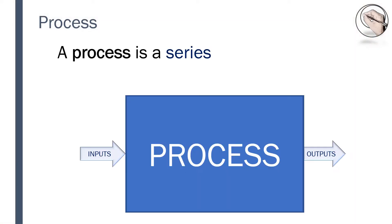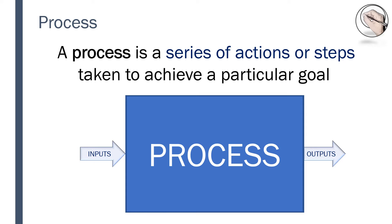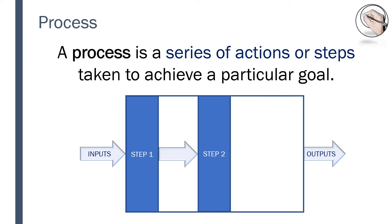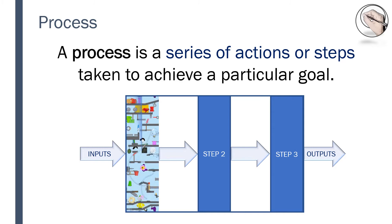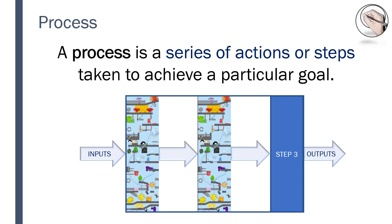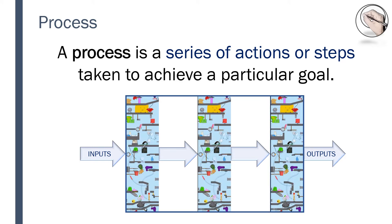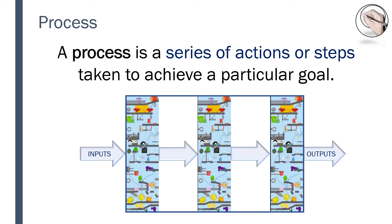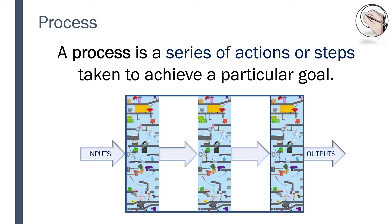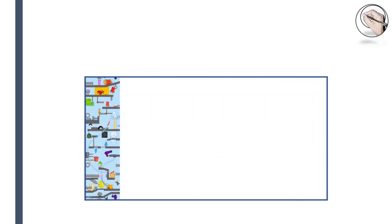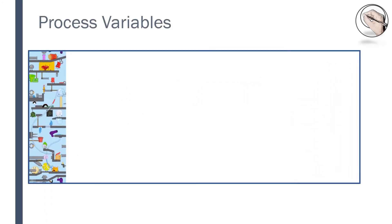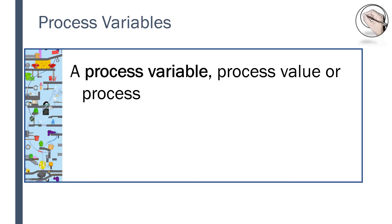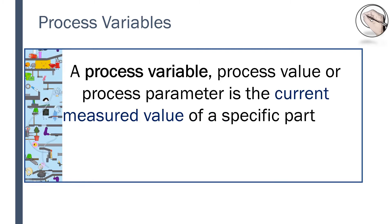A process is a series of actions or steps taken to achieve a particular goal. A combination of steps is a process, and there is a process within each step as well. In chemical or process engineering, each step is known as a process unit, wherein a process such as mixing, separating, or a reaction takes place. A process variable, process value, or process parameter is the current measured value of a specific part of a process which is being measured or controlled.